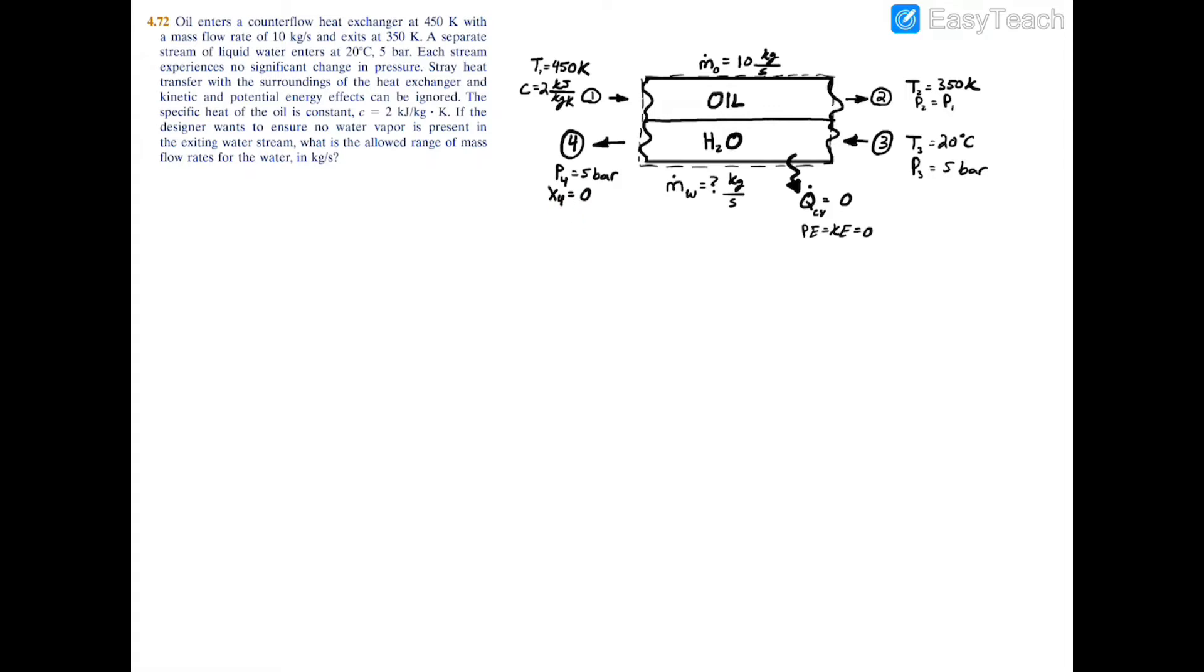We're given the mass flow rate of the oil and the specific heat of the oil. We're told there's no pressure drop between p2 and p1 or p3 and p4, and we're looking for the mass flow rate of the water in kilograms per second to ensure there's no water vapor buildup at the exit.